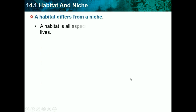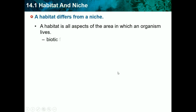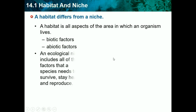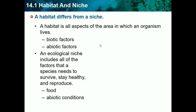Habitats differ from niches. A habitat is all aspects of the area in which an organism lives — everything, including biotic and abiotic factors. An ecological niche includes all of the factors that a species needs to survive and stay healthy — basically what it needs to stay alive, such as food, water, abiotic conditions like weather, or behavior.